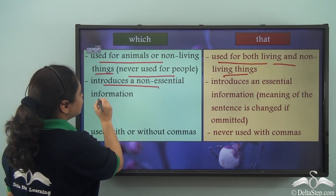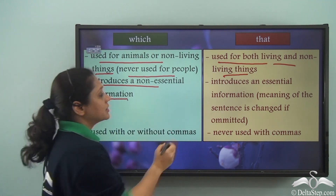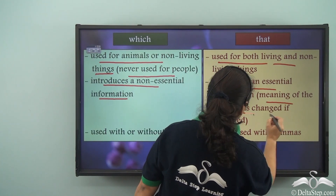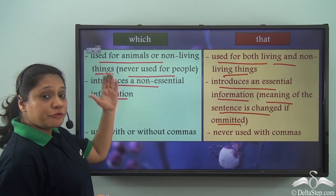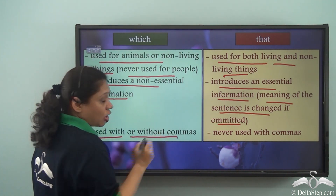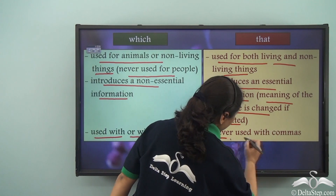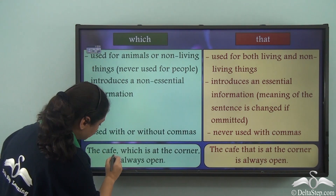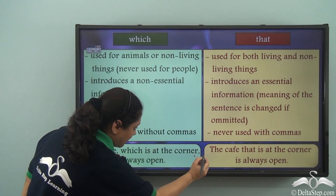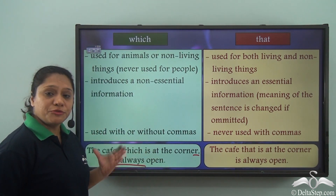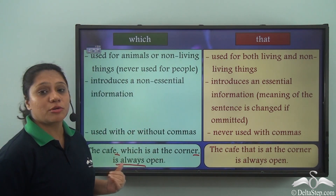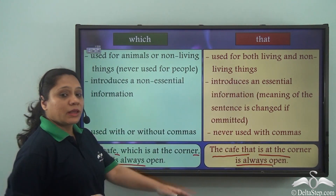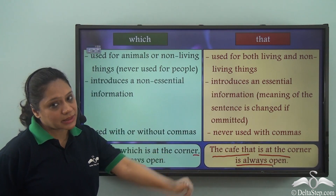'Which' introduces non-essential information, whereas 'that' introduces essential information — the meaning of the sentence is changed if it is omitted. 'Which' is used with or without commas, and 'that' is never used with commas. For example: 'The cafe, which is at the corner, is always open.' But if we write this sentence using 'that' we write: 'The cafe that is at the corner is always open.' Notice we have not used any comma in this sentence.